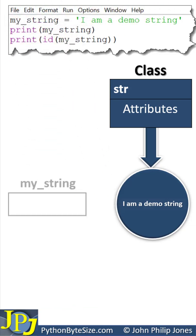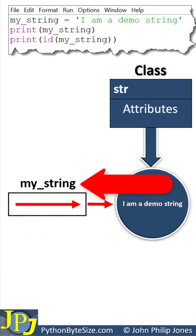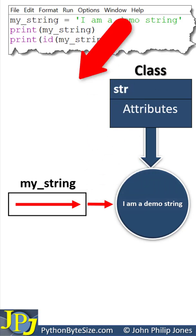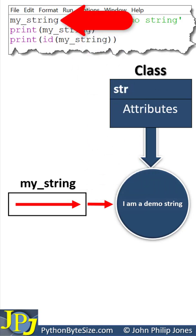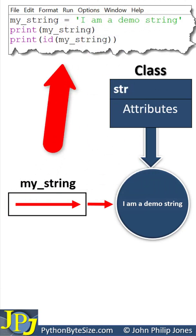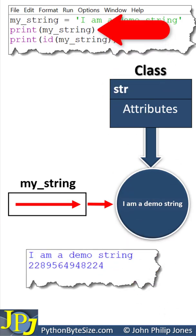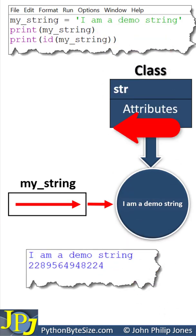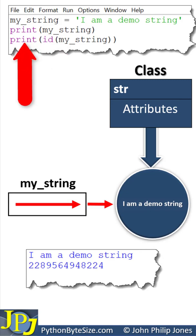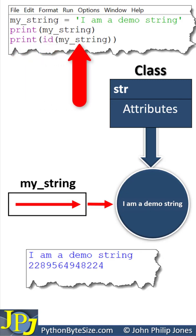We now need to realize that we're going to have a reference that points to that object. And here you can see this is my_string, which is taken from here in the program code. The runtime for this computer program is shown here. This line of the code is responsible for this output, and this, which prints the ID of my_string, is responsible for this output.